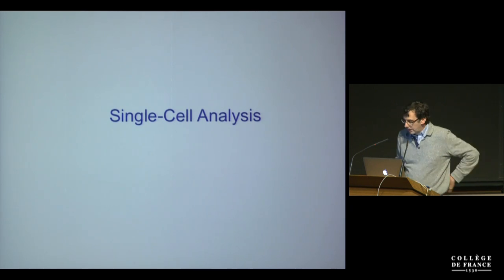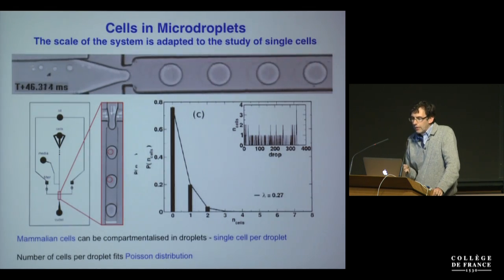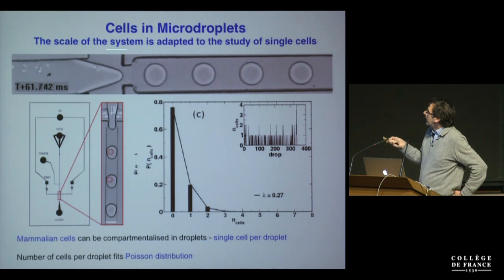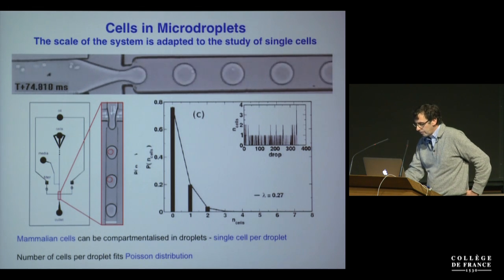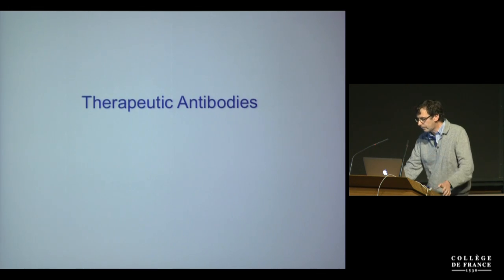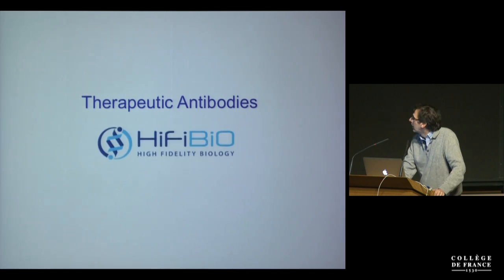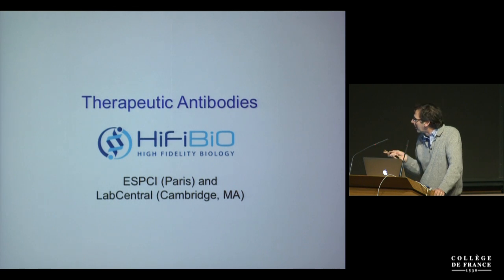What I want to concentrate on for the rest of the talk is single-cell analysis, because the scale of these systems is very well adapted to studying single cells — for example, we can put mammalian cells into droplets once again following a Poisson distribution. I want to talk first about the discovery of therapeutic antibodies using this kind of technology, in collaboration with HiFiBio, a spin-off that has labs at ESPCI and also in Cambridge, Massachusetts.